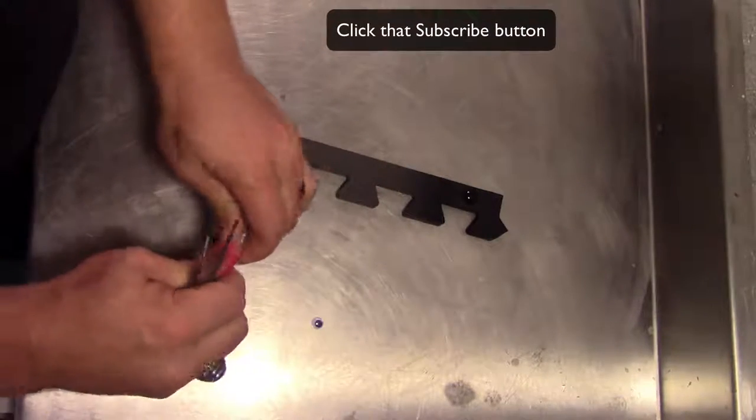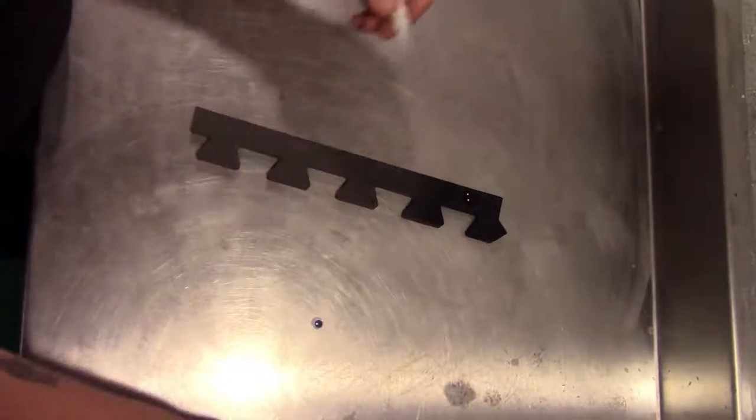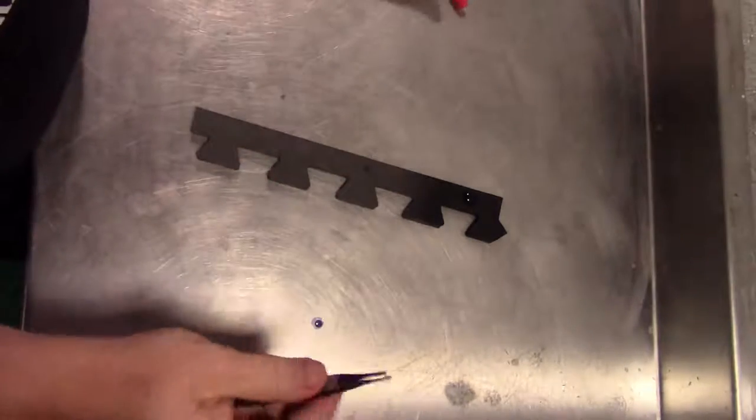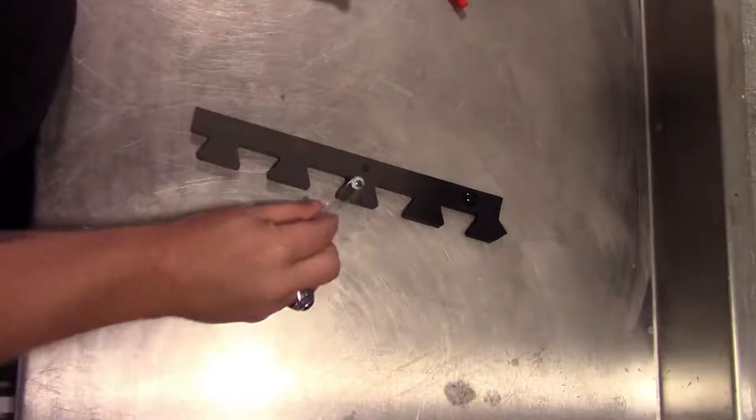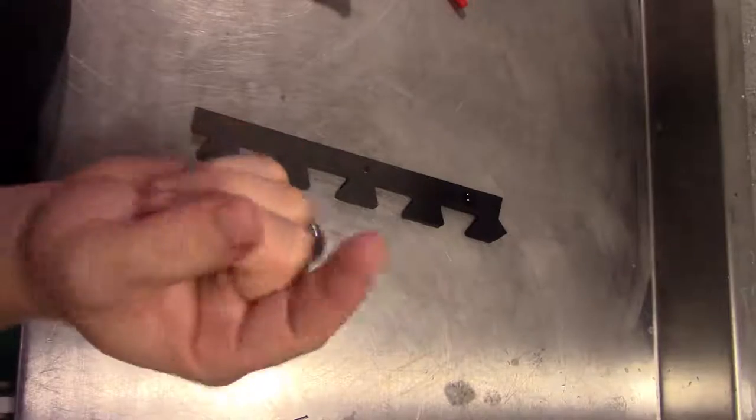So we're just going to take our super glue, add a small dab, and you have two options. You can use a pair of tweezers, something like that to place it. If you don't have tweezers, lick your finger just a little bit, wipe most of it off just so you get that tacky feeling on your finger.